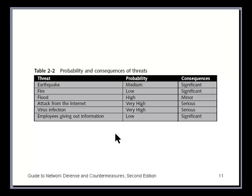We have a matrix indicating the threat, the probability of that threat, and the consequences. An earthquake has medium probability with significant consequences; a fire has low probability but also significant consequences. We're more likely to spend more money protecting against an earthquake because its probability is higher. Attack from the internet and virus infection both have very high probability with serious consequences — so those controls will be about the same in cost.